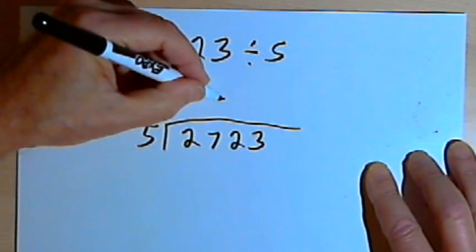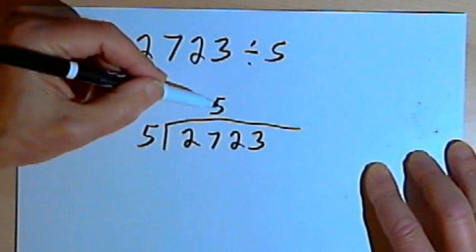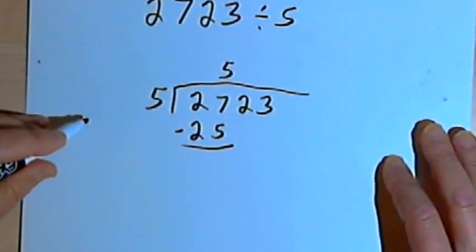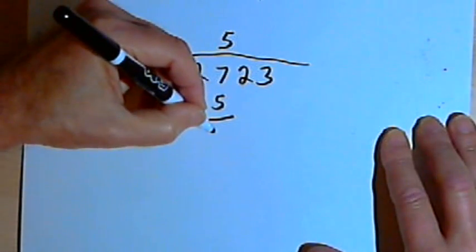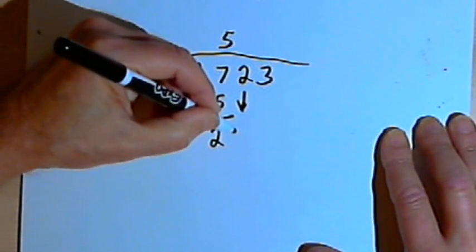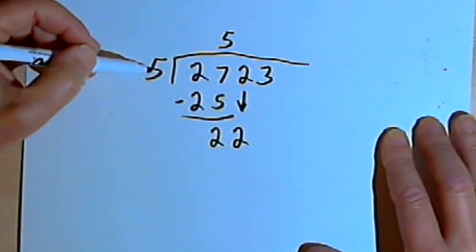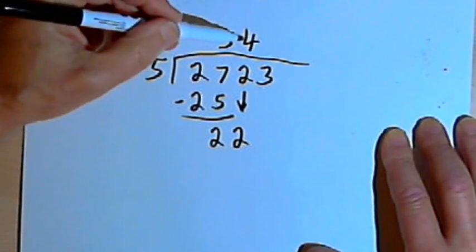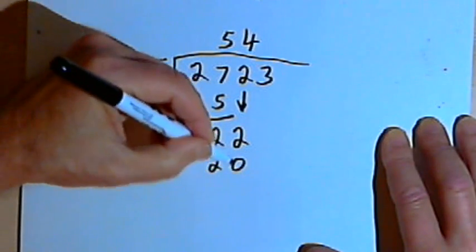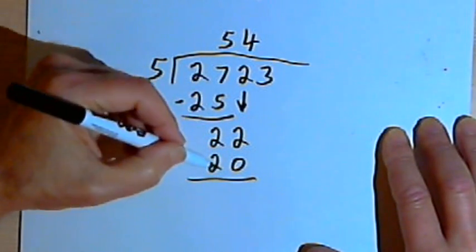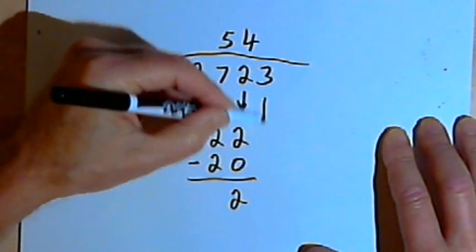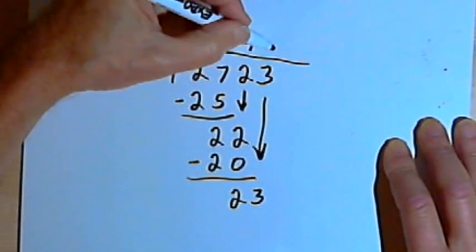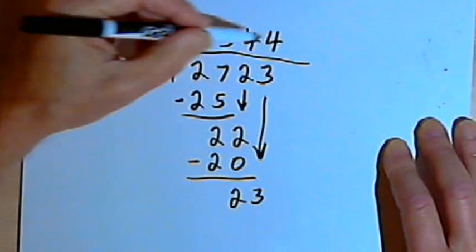5 into 27 goes 5 times. So I'll write 5 above that 7. And I'm ready to multiply. 5 times 5 is 25. Next step is subtraction. 27 minus 25 is 2. And then I bring down. So I'll bring down the next 2. Now I'm ready to divide again. 5 into 22 goes 4 times. I'll multiply. 4 times 5 is 20. I'll bring down the next digit, which is a 3. 5 into 23 goes 4 times. And 4 times 5 is 20.